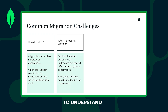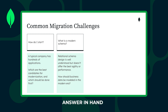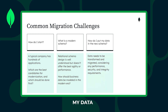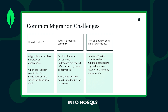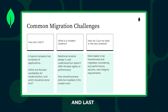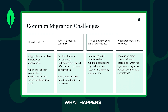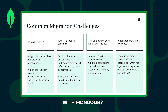Next, we need to understand what a modern schema is. How should I model my data in this modern era? With that answer in hand, we arrive at: how do I put my data into the new schema? How will the data be transformed and converted into NoSQL, considering performance and security? And last but not least, what happens to my application code — that old code? How do I transform and adapt it to work with MongoDB?